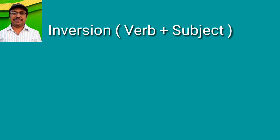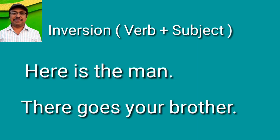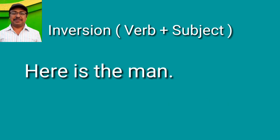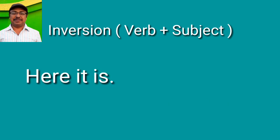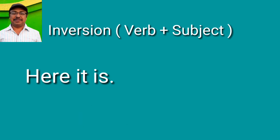After 'here' and 'there,' we use inversions: 'Here is the man,' 'There goes your brother.' But keep in mind, if a pronoun is there you cannot use inversion. You say 'Here it is' and 'There he goes.' You cannot say 'There goes he' or 'Here is it.'